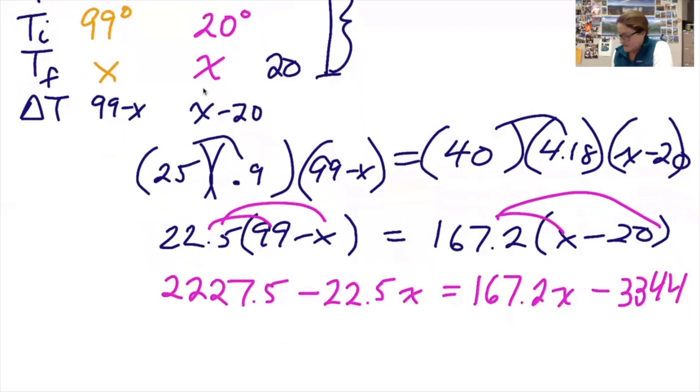Now I need to collect like terms. I'm going to add 3344 to each side. And I'm going to add 22.5 x to each side.